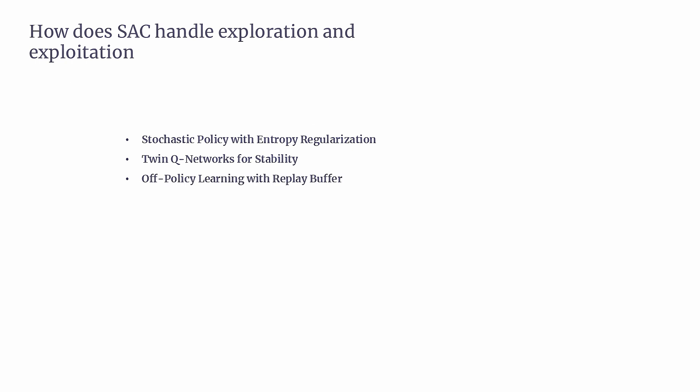The third mechanism is off-policy learning with a replay buffer. SAC is an off-policy algorithm, meaning it learns from a replay buffer — a storage of past experiences. Instead of relying only on recent interactions, SAC can revisit and learn from older experiences, which enhances exploration and efficiency. This mechanism allows SAC to try different actions and strategies, even if those actions were not selected recently, providing a richer learning experience.